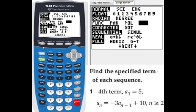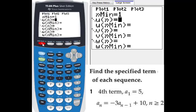Then we go to y equals this time. A sub 1 equals 5. That means given a minimum is 1, u sub n.